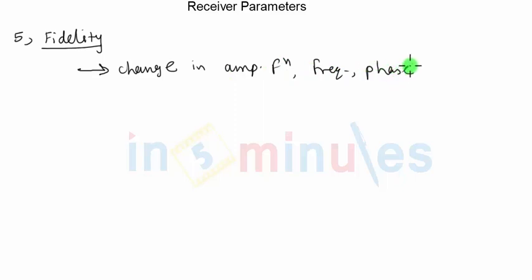So whenever there's a change in amplitude function, frequency, or phase, then the signal that is generated on the output of the receiver will not be exactly the same as the original signal. Any such type of change will decide the distortion present in the output signal and hence will also decide the fidelity of the receiver.